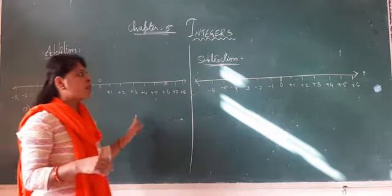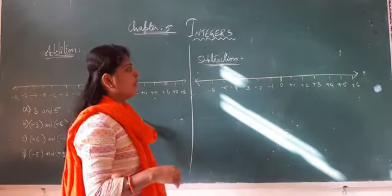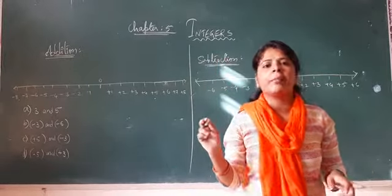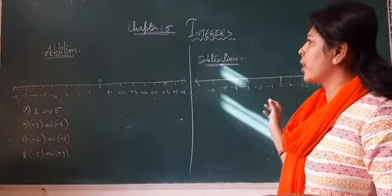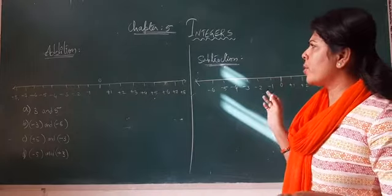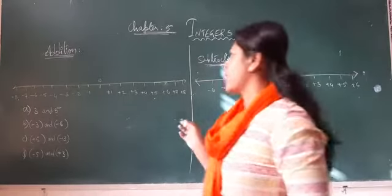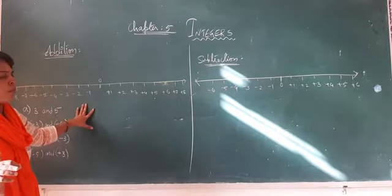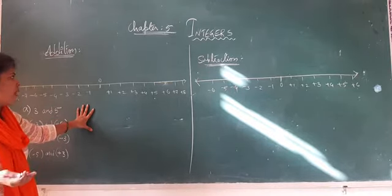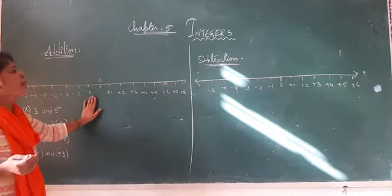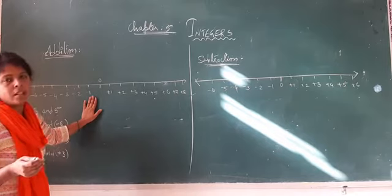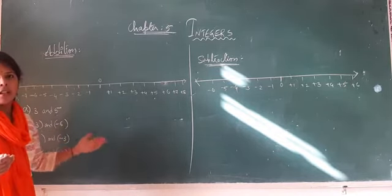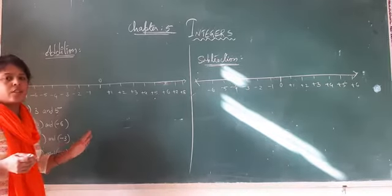Coming to the next class, children. Here we are going to see about how integers can be added and subtracted. The two operations we will see are plus and minus. We will see the examples here. I have already taken a number line. First, when we are studying this in the starting way, people can use this number line. Once you understand the concept, you can do the calculations without the number line.